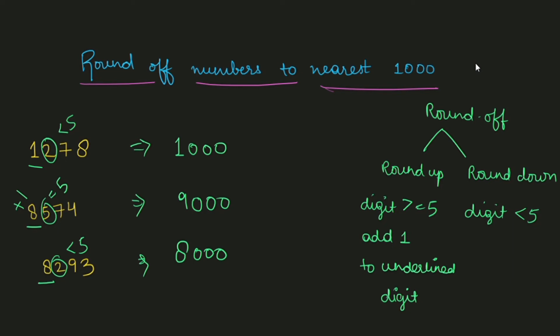They can also ask you to round off to the nearest hundred, nearest thousand, nearest lakh place, or even 10 lakh place. The rule remains the same: you identify the place you're rounding to, then compare the digit at the next smaller place value to 5.